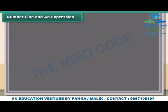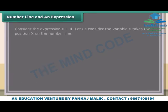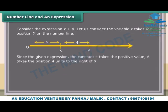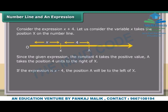Number line and an expression: Consider the expression x + 4. Let the variable x take a position on the number line. Since the constant 4 takes a positive value, point A takes the position 4 units to the right of x. If the expression is x − 4, the position will be to the left of x.